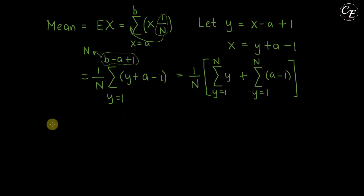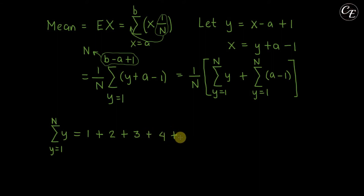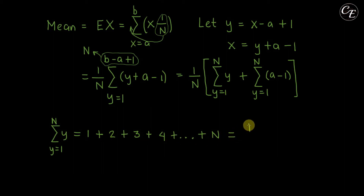For the summation of y from 1 to n, this expands as 1 plus 2 plus 3 plus 4 plus ... plus n. This is an arithmetic series, and from algebra, the sum of this arithmetic series has the formula n times (n plus 1) over 2.